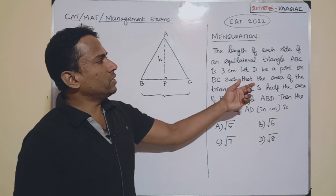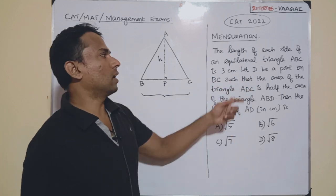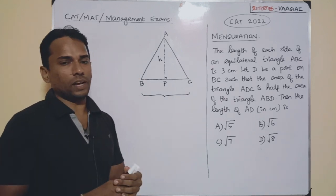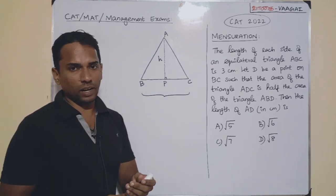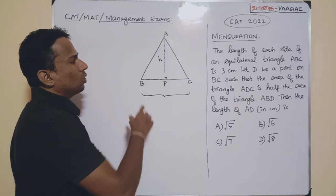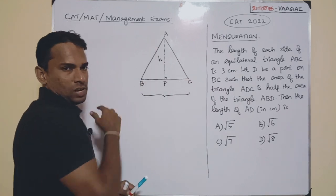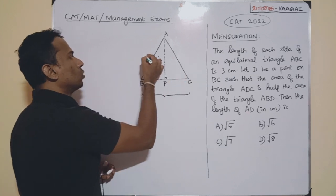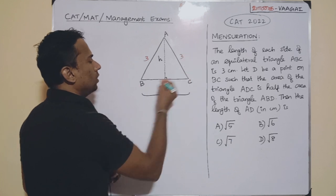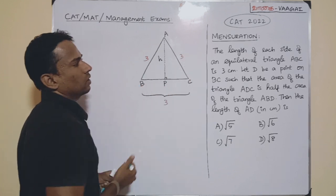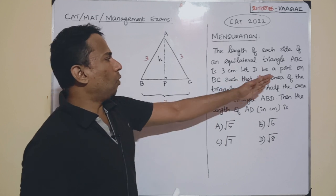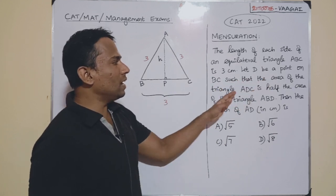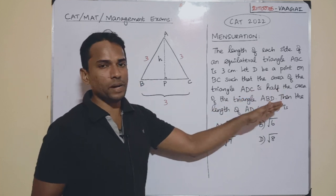The length of each side of an equilateral triangle ABC is 3 centimeters. So, we know that in an equilateral triangle, all the sides will be equal. This triangle is going to be ABC and the sides are 3 centimeters each. Let D be a point on BC such that the area of triangle ADC is half the area of triangle ABD.